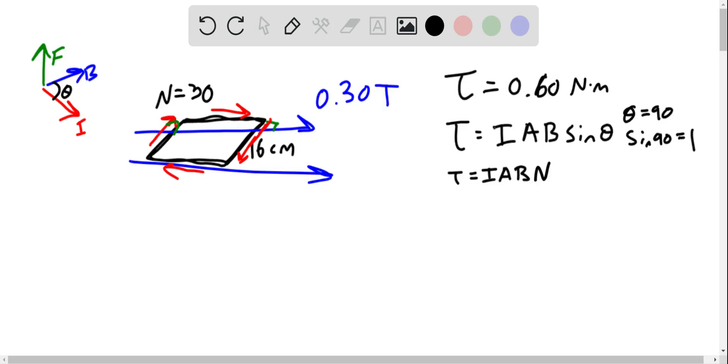So if we go ahead and look at things that we know, we know the torque, we know the magnetic field, and we know the area since it's 16 on each side of the square. So actually, what we don't know is I, the current that would be running through this coil in order for it to feel this torque. So what we could do is solve for I, and divide by the area, magnetic field, and number of turns.